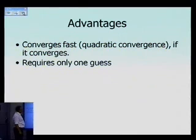Some of the advantages of Newton-Raphson method: as we have seen from examples, it converges fast, but of course only if it converges, and the convergence is quadratic for Newton-Raphson method. Also, one of the good things about Newton-Raphson method is it requires only one guess.